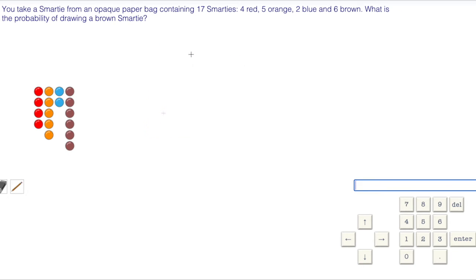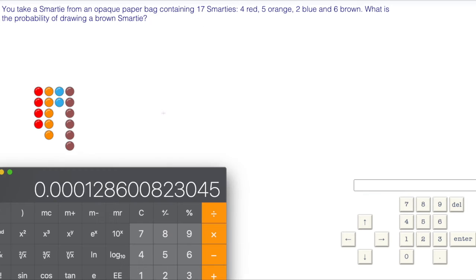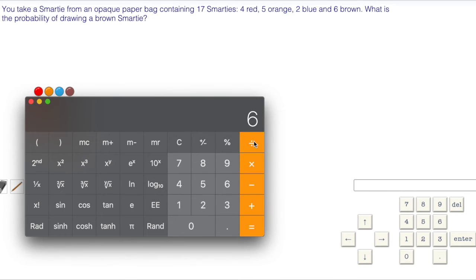You can enter your answer in a lot of different forms. You can enter it as a fraction, you can enter it as a decimal. Here, what's the probability of drawing a brown smartie? We have six brown out of 17. If you wanted to, you could do six divided by 17—six out of 17—which is 0.3529. If you enter it like that, totally acceptable.